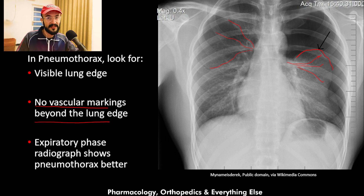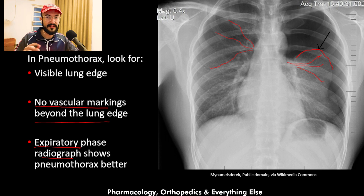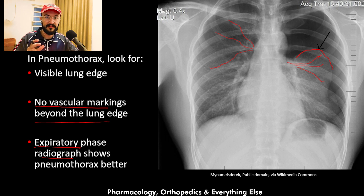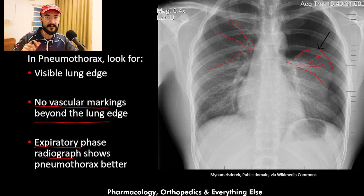Pneumothorax is best viewed on expiratory phase radiographs. X-rays taken during expiration are better for viewing pneumothorax because the lung is smaller in size, making it easier to see the lung edge and the pneumothorax.